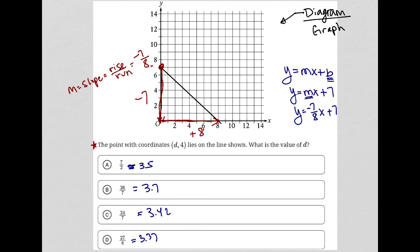So now the question is really asking, what's the value of D? Well, we're finding D is really an X value for when Y equals 4. So if I replace Y with 4, I get 4 equals negative 7 eighths X plus 7. I can then subtract 7 from both sides here. I have negative 3 equals negative 7 eighths X.